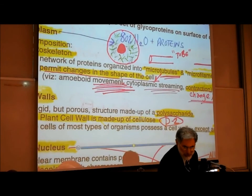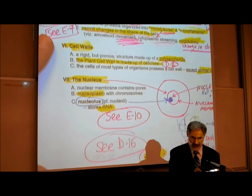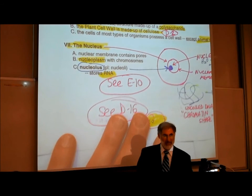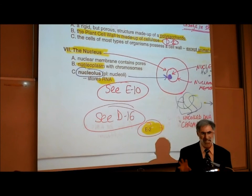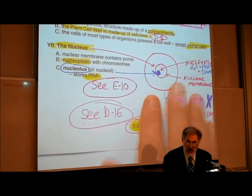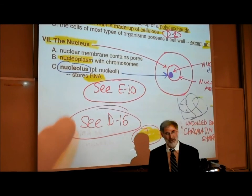Let's talk about the nucleus of a cell. The word nucleus literally means "center." The nucleus in a cell refers to this large structure in the center of the cell. Prokaryotic cells, such as those of bacteria, don't have a nucleus, but most cells do have a nucleus.